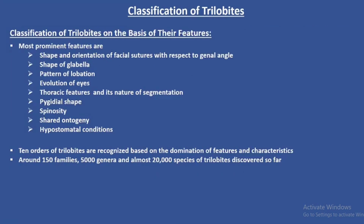For classifying the trilobites, the most prominent features required are: the shape and orientation of facial sutures in the cephalon with respect to the general angle, the shape of the glabella, the pattern of lobation, the evolution of their eyes, the thoracic features, the number of thoracic segments and its nature of segmentation, the shape of the pygidium, spinosity, their shared ontogeny, and the condition of the hypostomata.